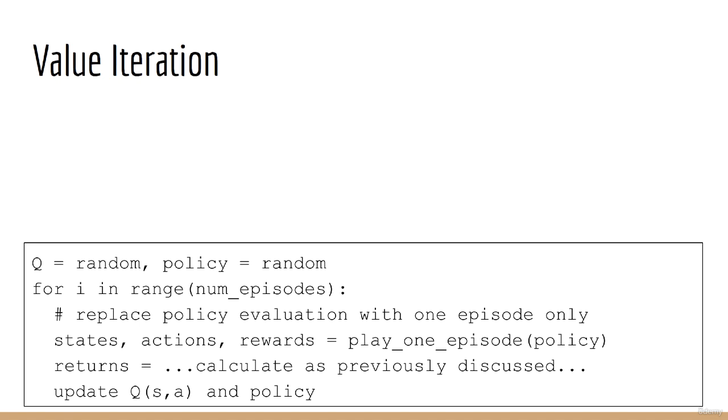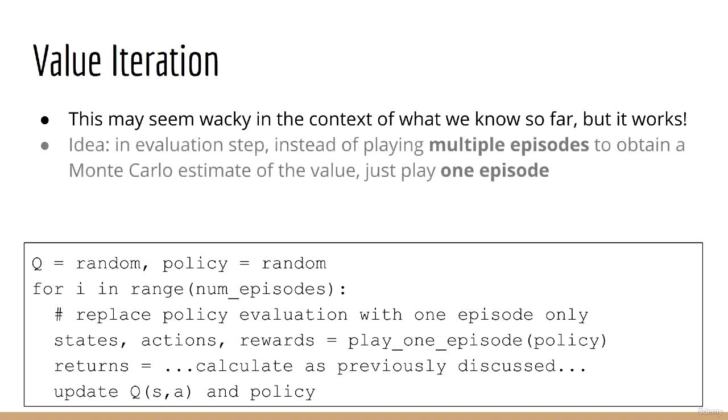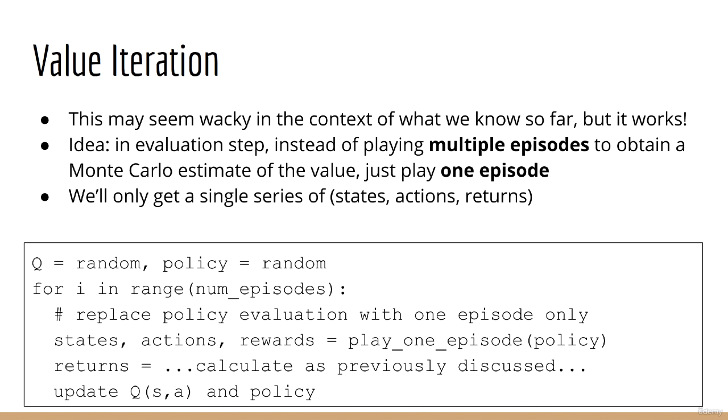A better solution is to use what's called value iteration. At first, this approach may seem kind of wacky, but in fact it's been shown to work. The idea is this. For the policy evaluation step, instead of playing multiple episodes in order to get a good estimate of the value of our policy, we are only going to play one episode. After playing this one episode, we'll get a series of states, actions, and rewards from which we can calculate the corresponding returns. From that, we can loop through each state, action, and return, and use the latest sample of the return to update Q of S A. Now you'll notice that I've just put some pseudocode here, update Q of S A, but I haven't told you exactly how we're going to do that. We'll be discussing this shortly. The important thing to note right now is that we'll only keep a single running copy of Q of S A. The next and final step is the same as before. We update the policy by taking the argmax over Q for a given state over all actions.